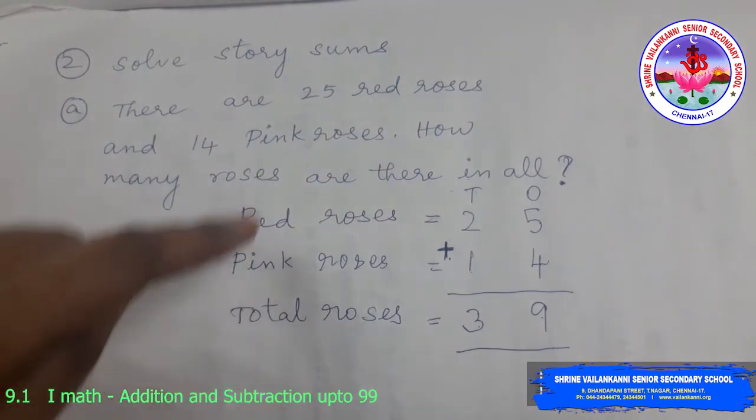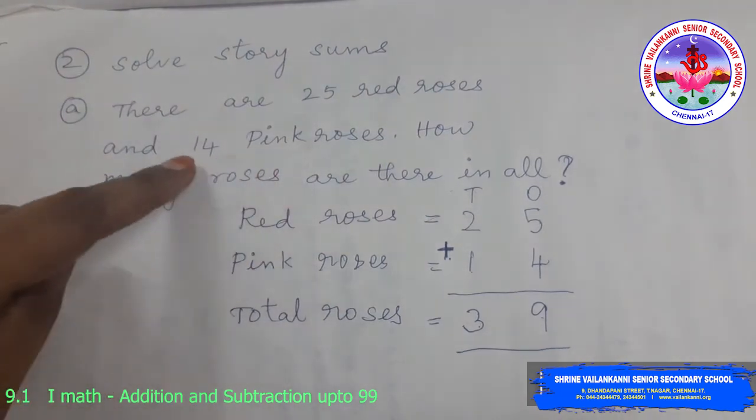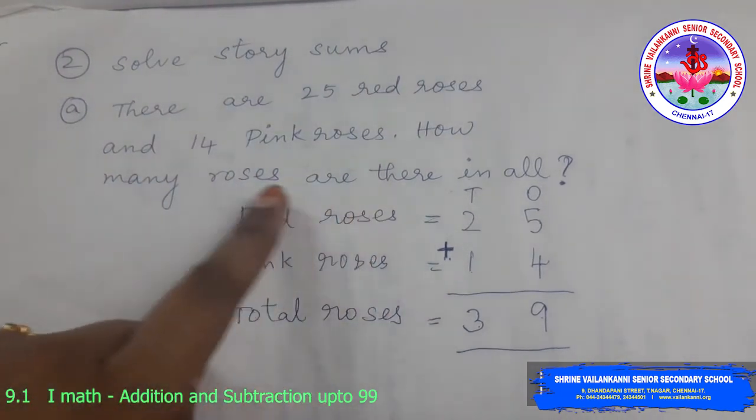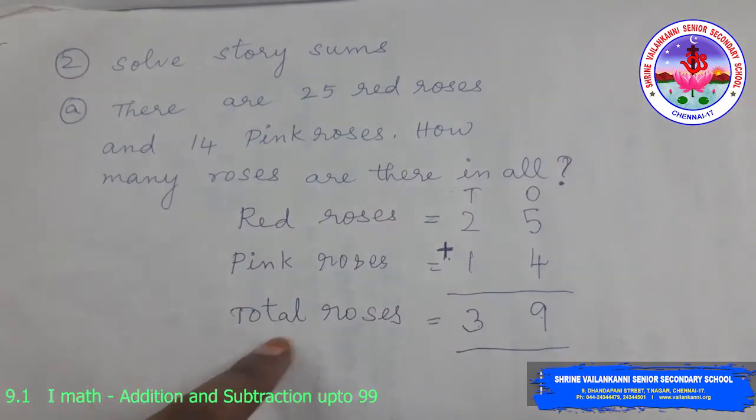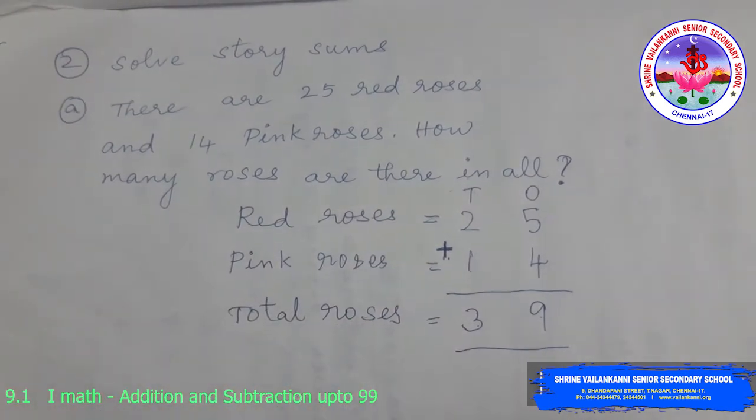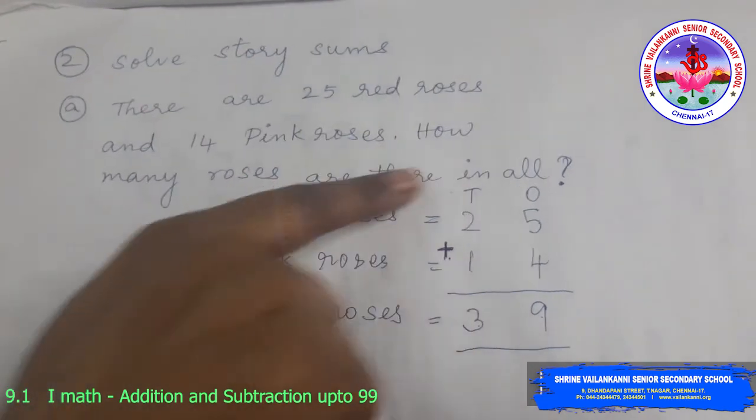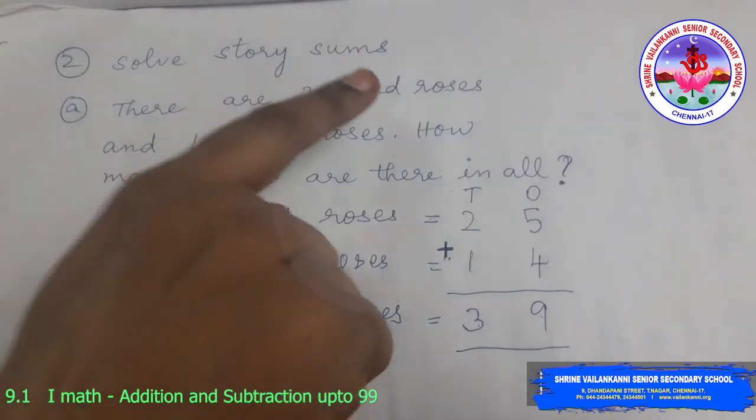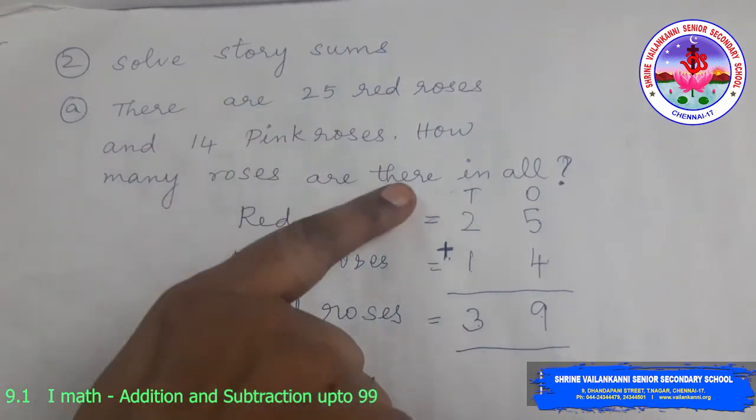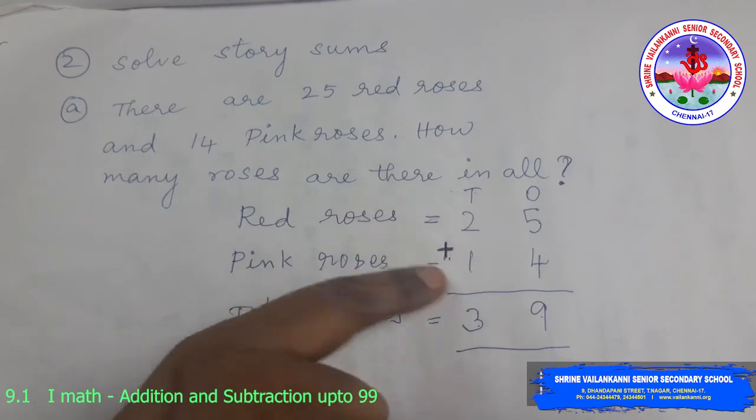Yes. These words are already there. Red roses, 25. Pink roses, 14. Then, how many roses in all? So total roses, you get the answer. You just practice like this to solve the story sums. Main thing is, you should read the story sum and understand the concept. And what are the things given and what you have to find out. And the symbol is really important. What you are performing should be shown.